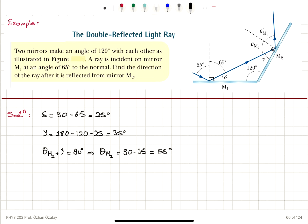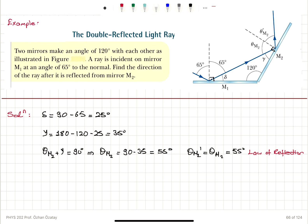We want to know the direction of the ray after it's reflected from mirror M2. We know that theta M2 prime is equal to theta M2 due to the law of reflection, so that's also 55 degrees. The reflected ray makes an angle of 55 degrees with respect to the normal of M2, which clarifies the direction of the reflected ray.